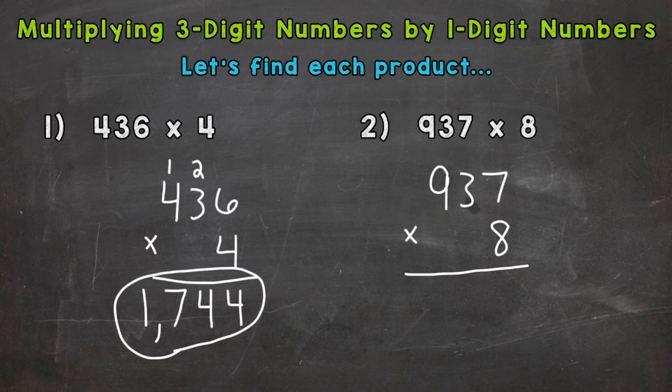8 times 7 is 56. So let's carry our 5 to the tens place. Now we do 8 times 30 or we can just think of it as 8 times 3 plus that 5. So 8 times 3 is 24 plus that 5 is 29.